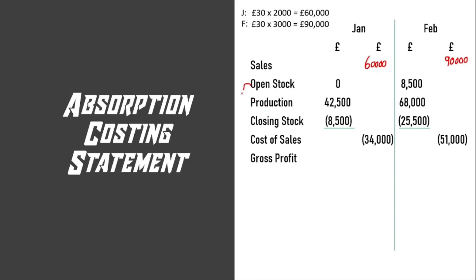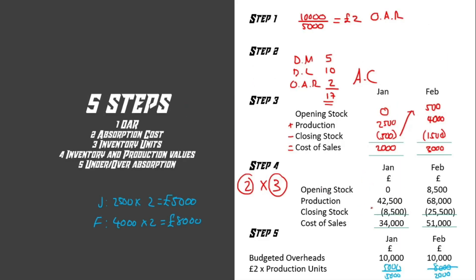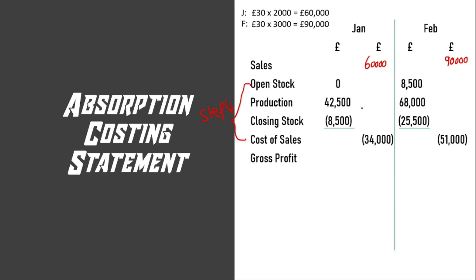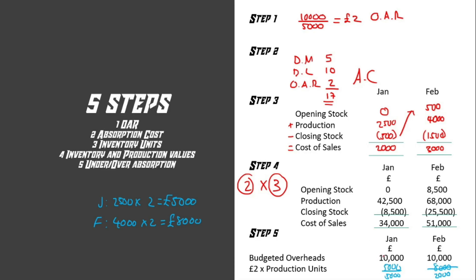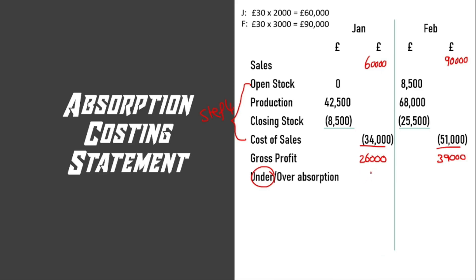Next we write the inventory flows — these figures come from step four. Transfer the values you calculated to the absorption costing statement. Once done, you can work out the gross profit: £26,000 for January and £39,000 for February. Then we apply the under or over absorption — in this case it's under absorption, so we include it as a cost: £5,000 for January and £2,000 for February. That gives a net profit of £21,000 for January and £37,000 for February.